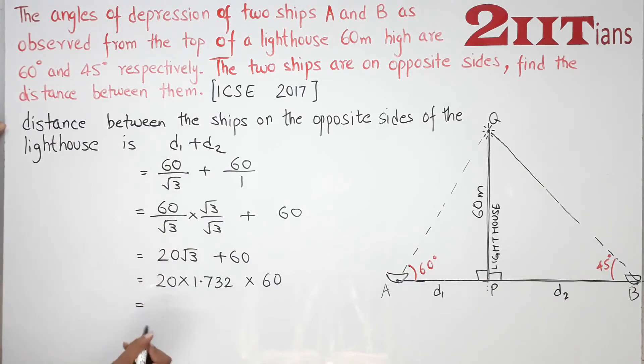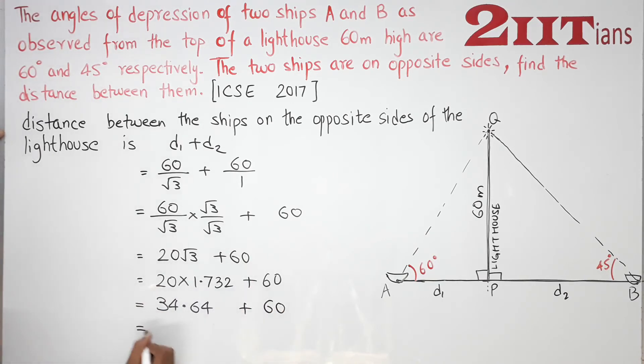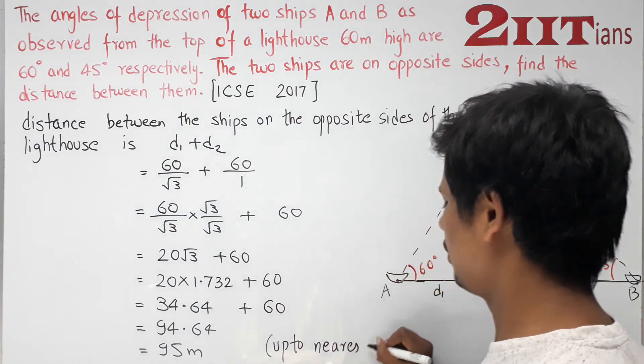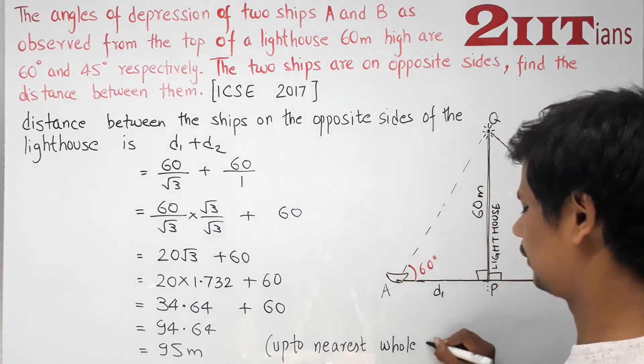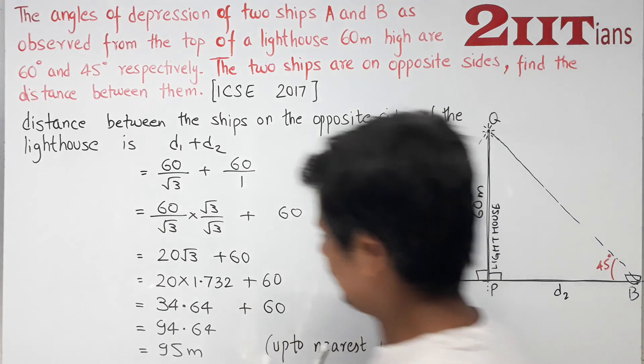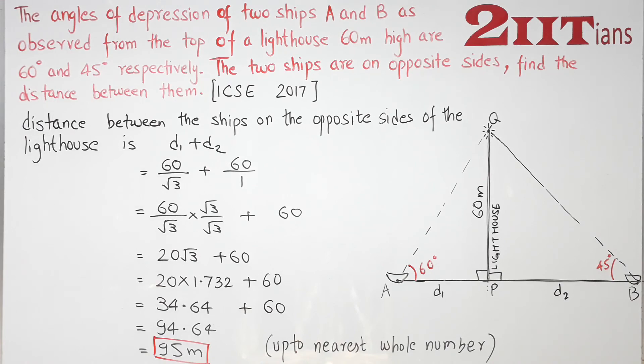Now multiply by the value of root 3, which is 1.732. After calculation, we get approximately 95 meters. So the distance between ships, to the nearest whole number, is 95 meters. So this is done.